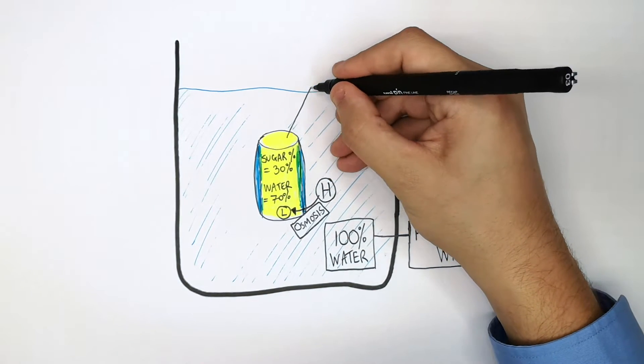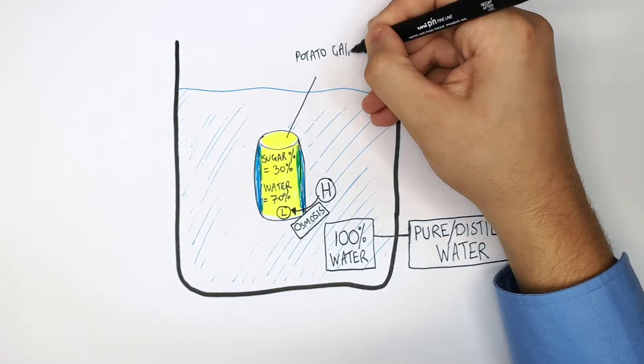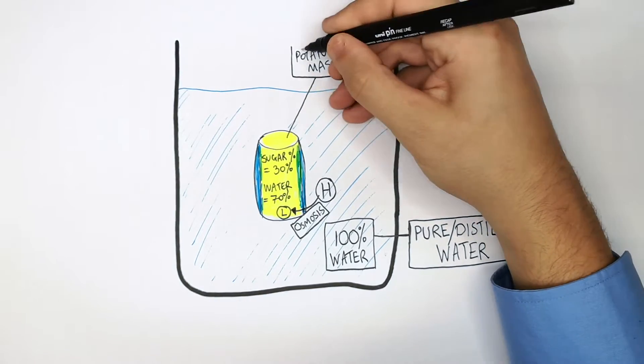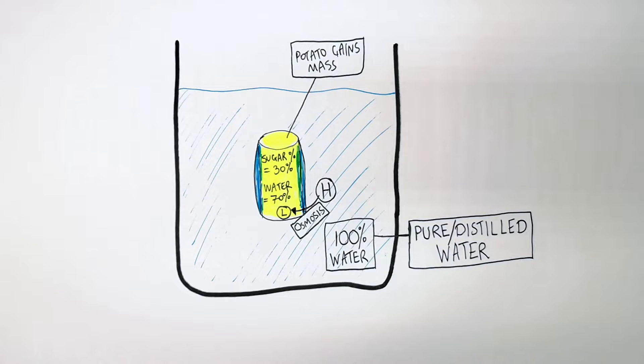In this situation, water has gone in and the potato has gained mass. So osmosis has caused the potato to gain mass.